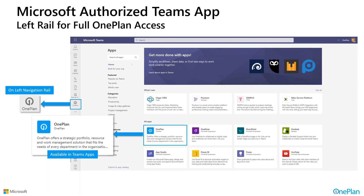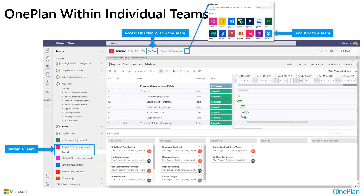Because OnePlan is a Microsoft-authorized Teams app, if you're licensed for OnePlan, you can have it show up on the left navigation rail so you can access the application directly from within Teams as you do your other collaborative work. You could also, just like Project for the Web, add it to any particular team using the add tab plus sign, and access OnePlan capabilities in addition to augmenting what you're doing with Project for the Web.